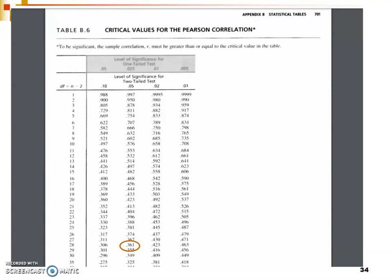This video is part of two different playlists. You might have gotten here after watching the first video about how to conduct and interpret a Pearson correlation using SPSS, but this video is also part of my stats class chapter 15 lecture notes — specifically part 3. Either way, the last video ended on identifying the critical value for our Pearson correlation using the table.